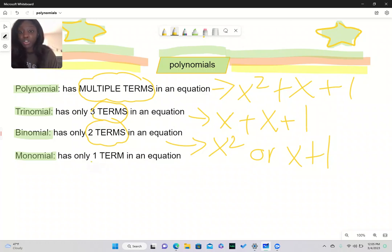And lastly, we have a monomial. A monomial has only one term in an equation, and these would just be things like x or y.